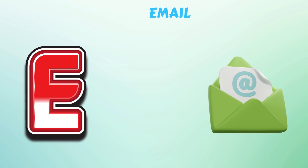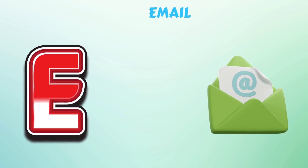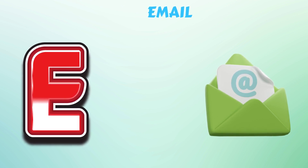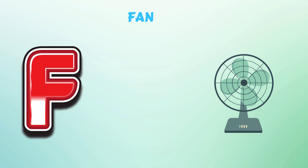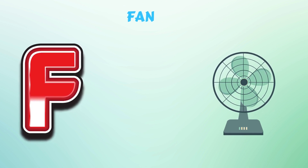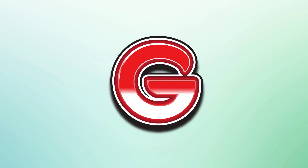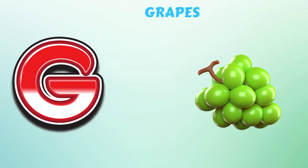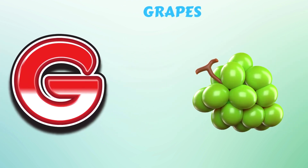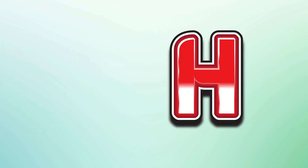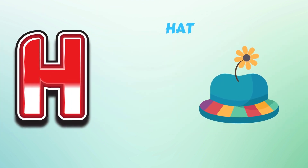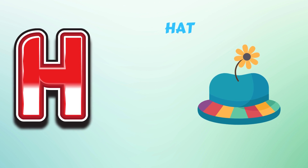E. E is for Aan. F. F is for Fan. G. G is for Grapes. H. H is for Hat.